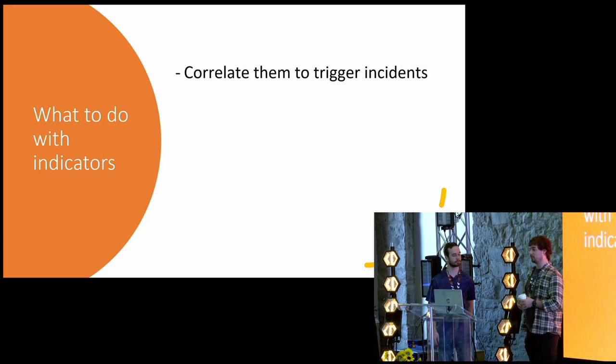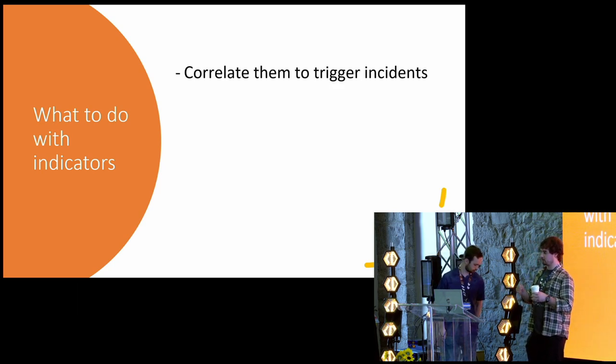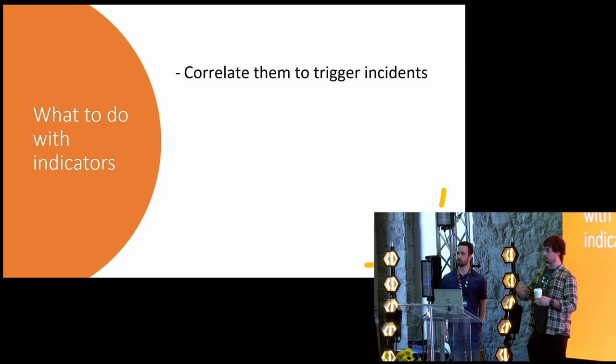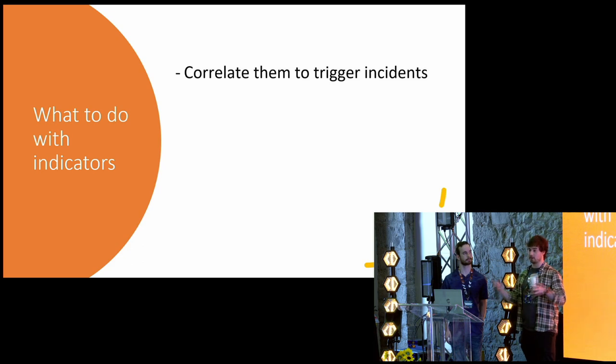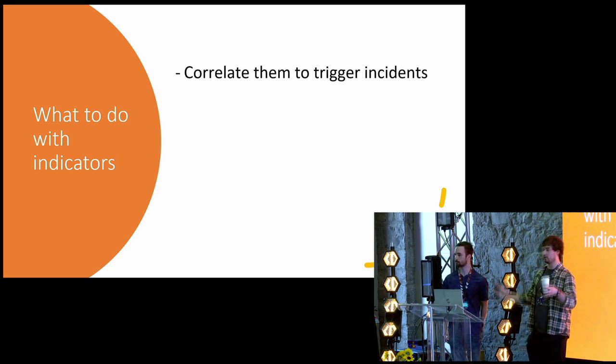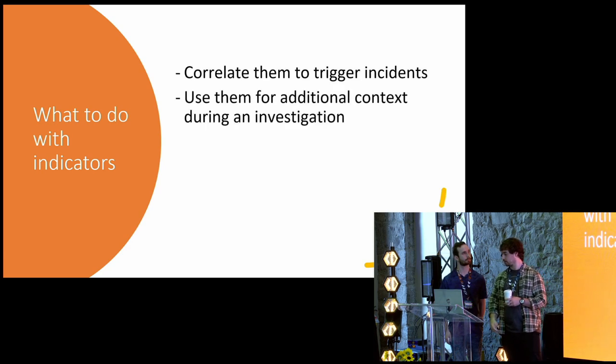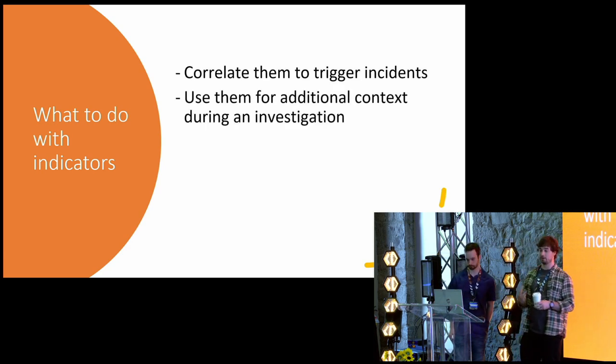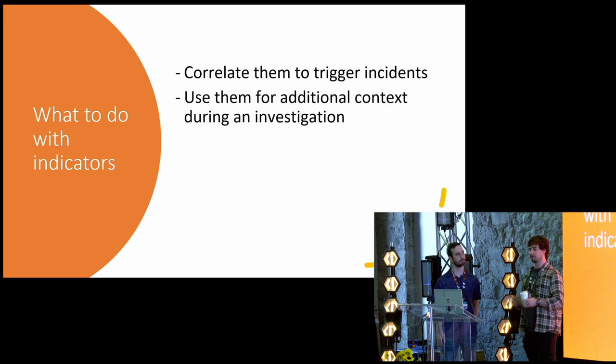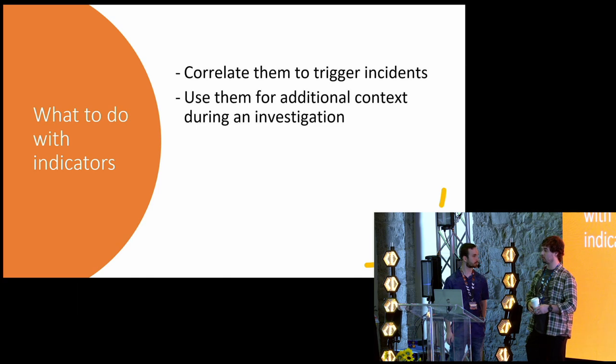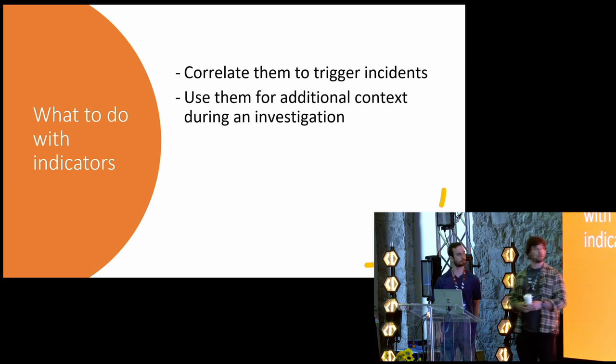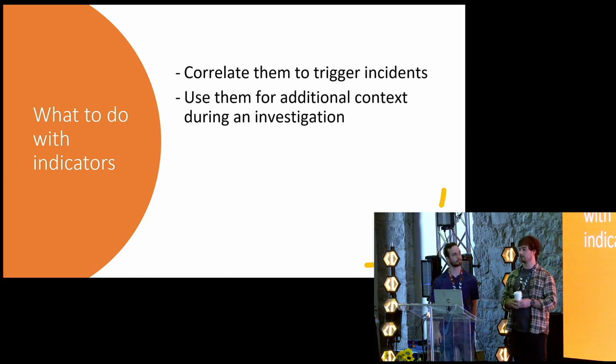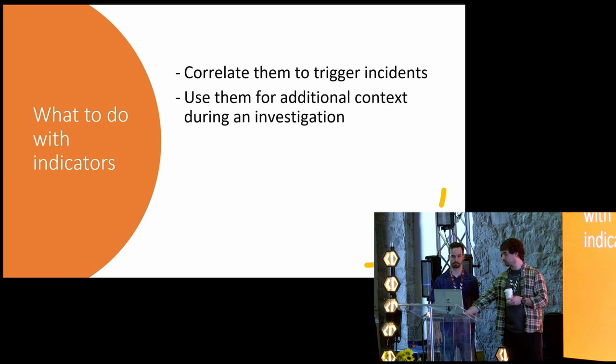So let's say you have a phishing attempt, like an indicator for a phishing attempt, but it's not like precise enough to get an alert for it. And then you have the same thing for persistence afterward and something else. And then you might just tag them and build an alert for the whole incident. You might also use them for additional context. So let's say you have a ticket to investigate. You want to see for a host what else has happened on the same host during the same time period. Well, you can just use what has already triggered as an indicator on the same host.